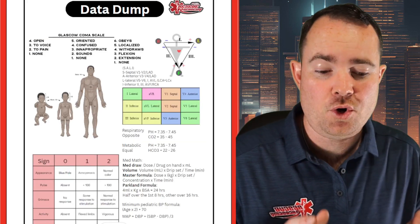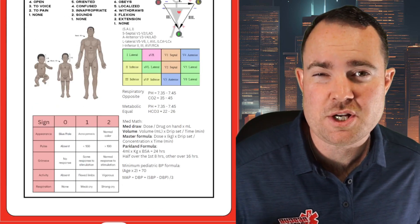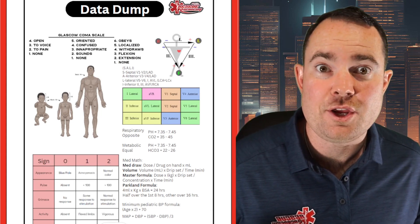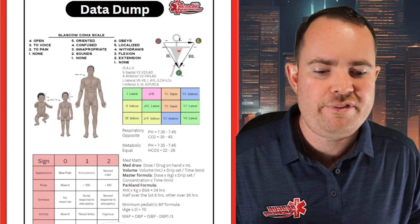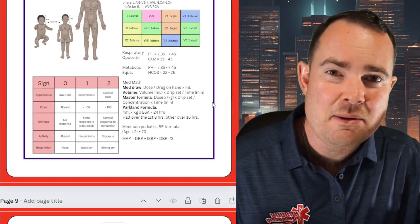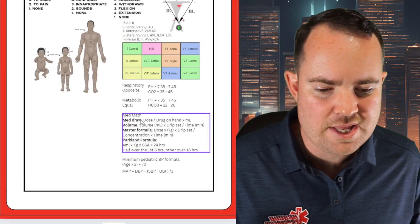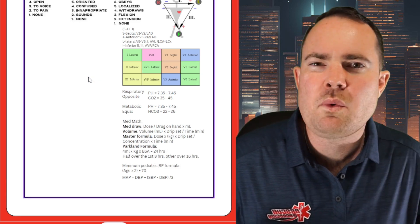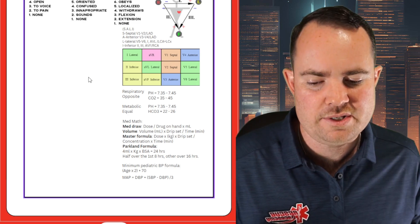Looking at this example data dump, it's pretty full — there's not much space left on the sheet. But maybe you feel comfortable with some of these topics. For example, the APGAR score — if you have that committed to memory, you don't want that on yours, go ahead and erase it. Maybe even rule of nines — if you feel comfortable with that, erase it. Whatever works for you is how you design your data dump.